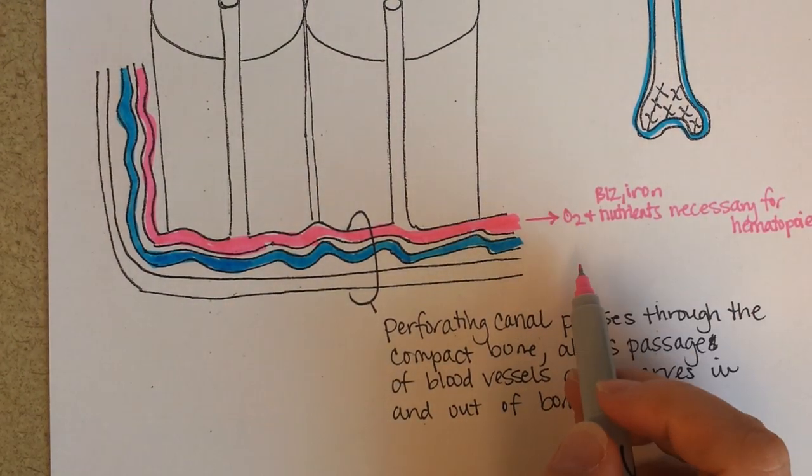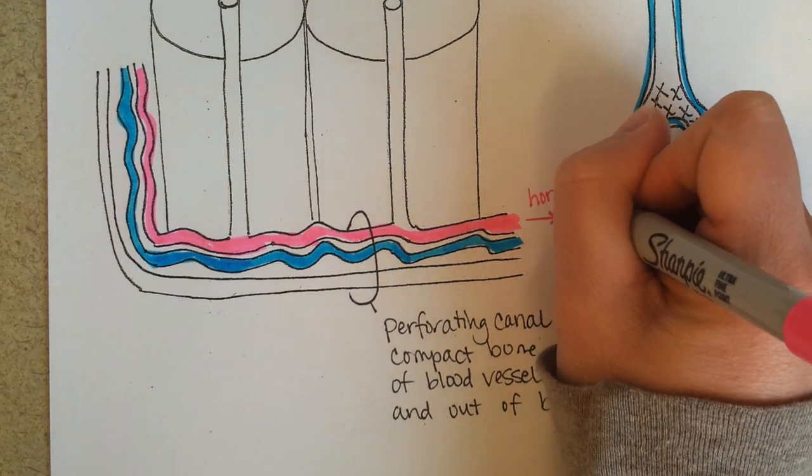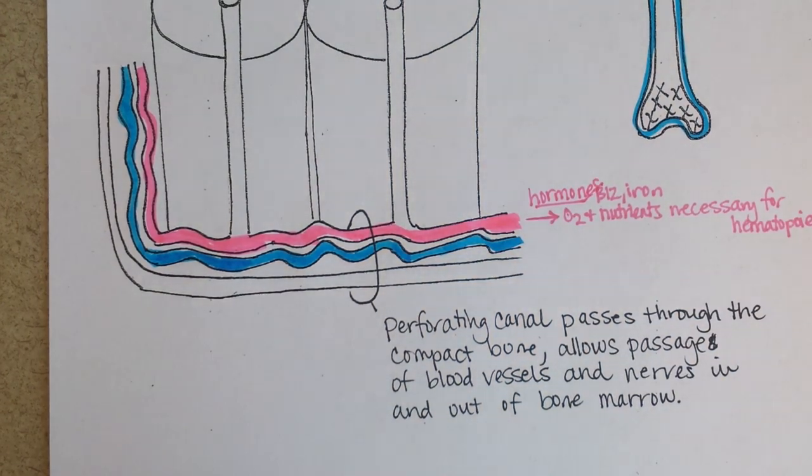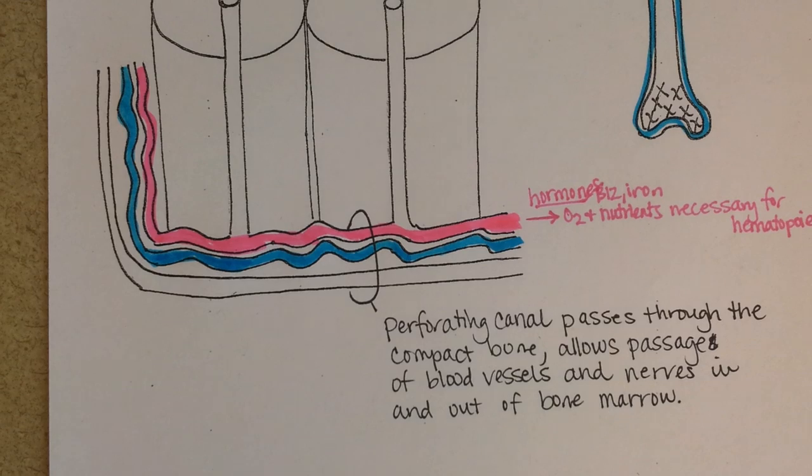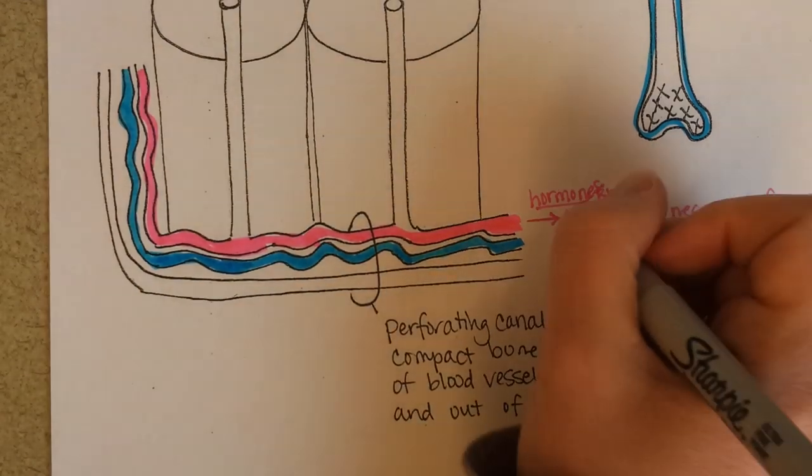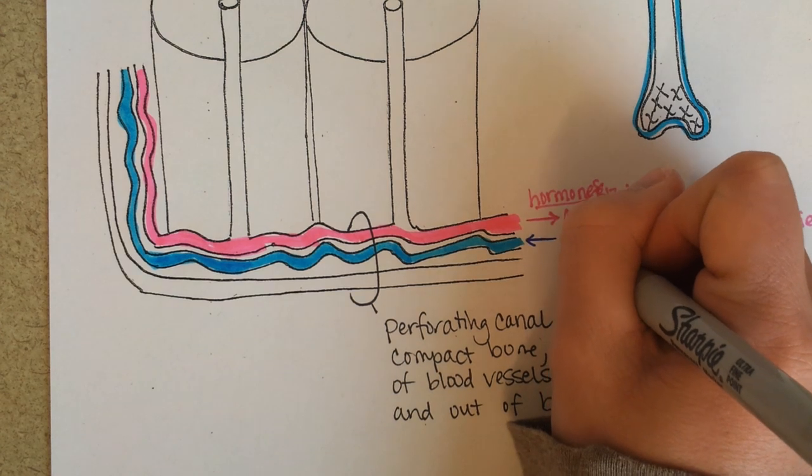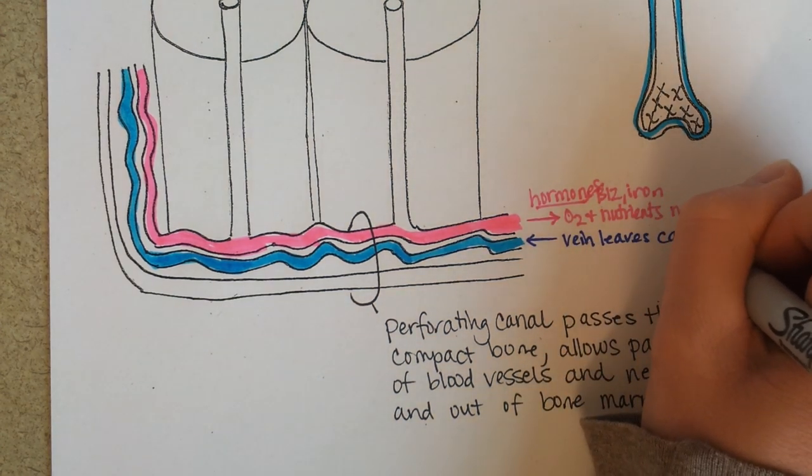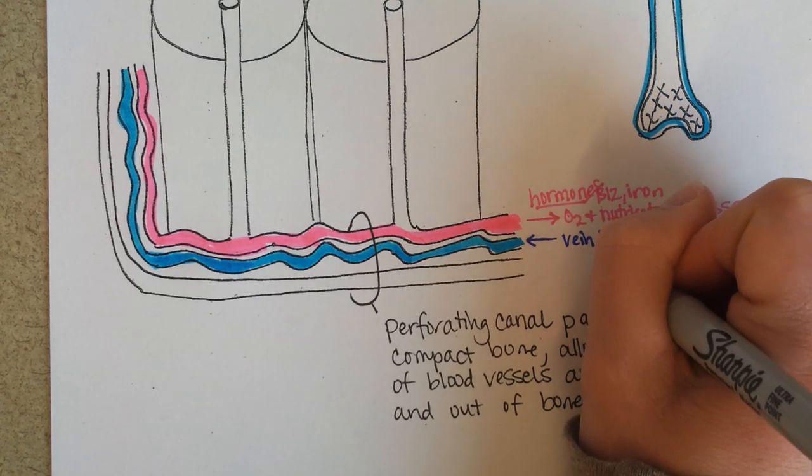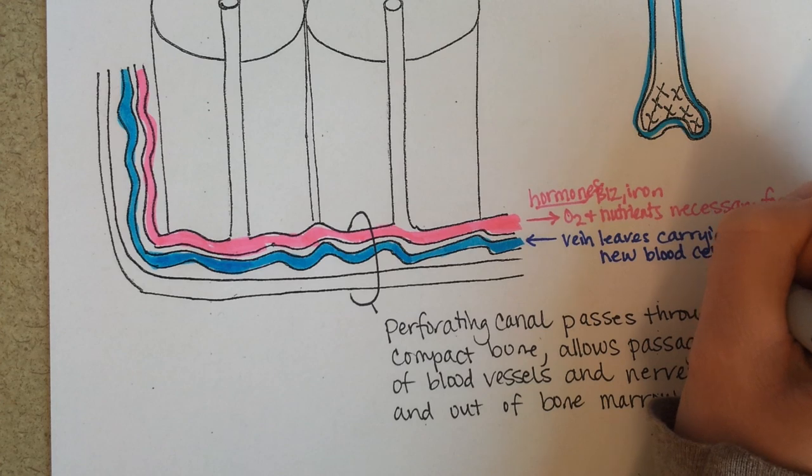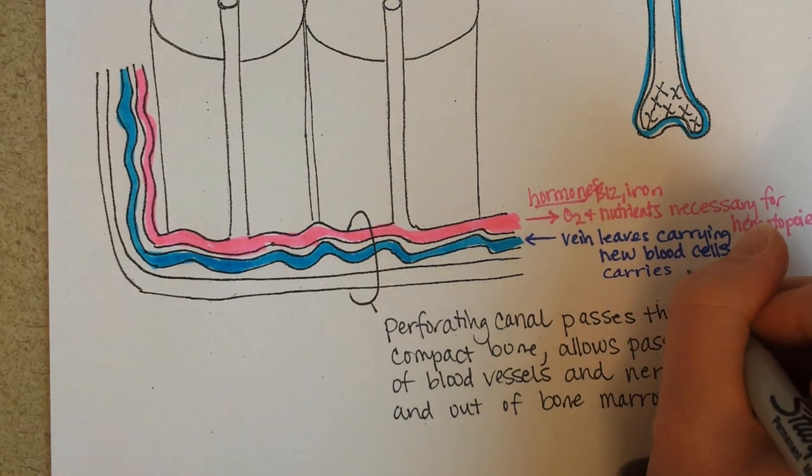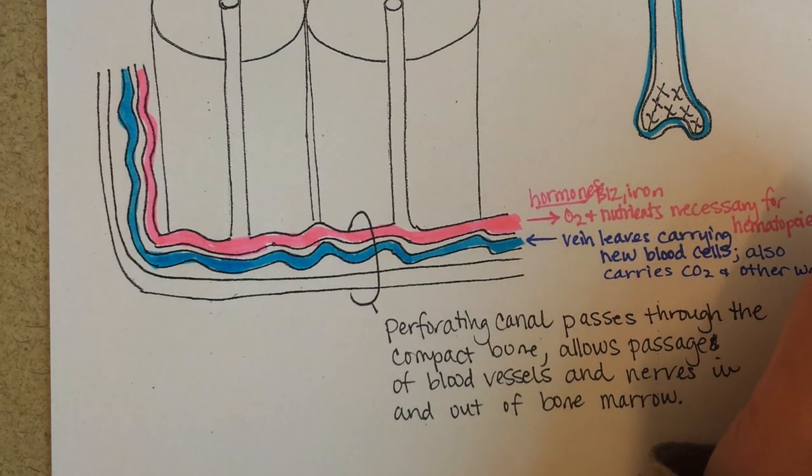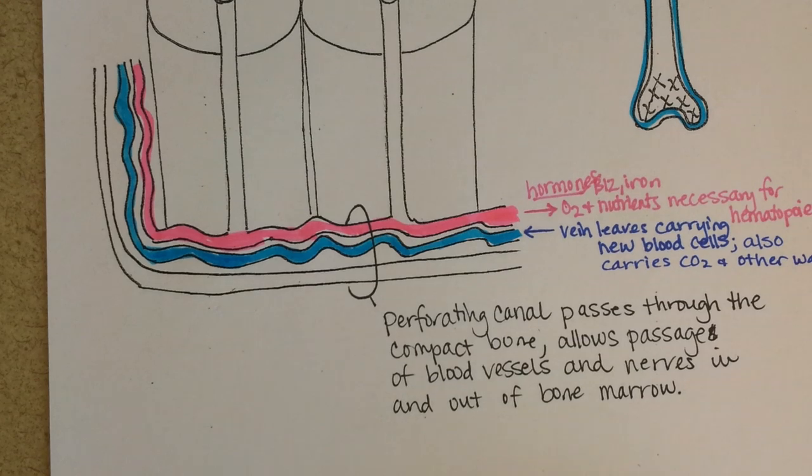And then a vein would leave the bone marrow, also exiting out through a perforating canal. Because bone is solid, right? So you've got to have a tunnel through it for soft and squishy things like blood vessels and nerves. And the names of those tunnels are perforating canals. And also, you know what we should add too, the hormones that stimulate red blood cell production, such as erythropoietin would be carried in that blood from the kidneys. And then the vein is leaving.